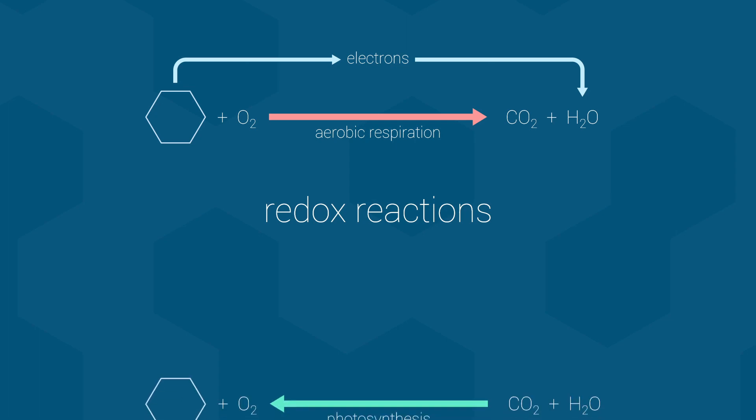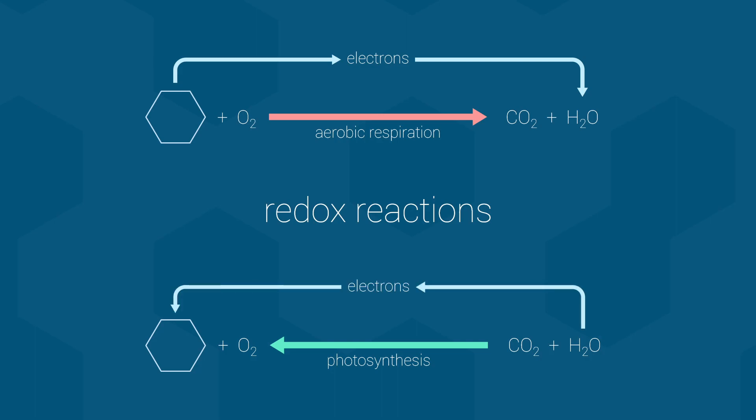Note that life can also do the backwards reactions as well, where carbon dioxide is reduced to form sugar molecules, and water is oxidized to form oxygen. Again, electrons are transferred, but this time in the opposite direction. The most notable example of these reactions occurs during photosynthesis, which is also something we will explore during Biology 112.